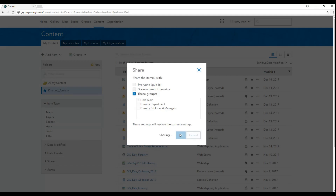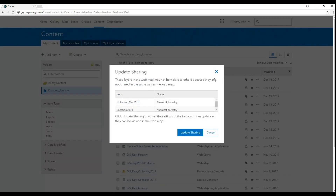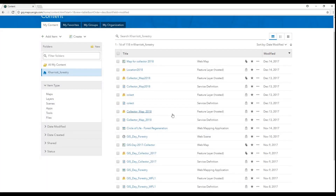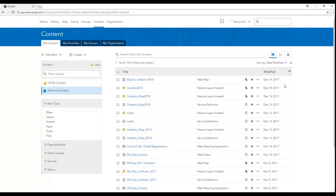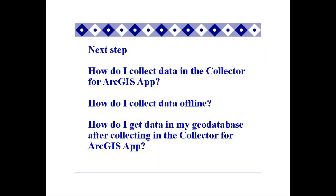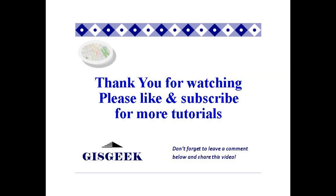Now that you've completed your web map, you are ready to collect data. By now you must be wondering — how do I collect data in the Collector app without using Wi-Fi or cellular data? In other words, how do I collect data offline? Or, now that I've collected my data, how do I get it off ArcGIS Online and into my geodatabase? Well, stay tuned to my next tutorial to find out. Thank you so much for watching — please don't forget to like and subscribe for more tutorials. See you next time.